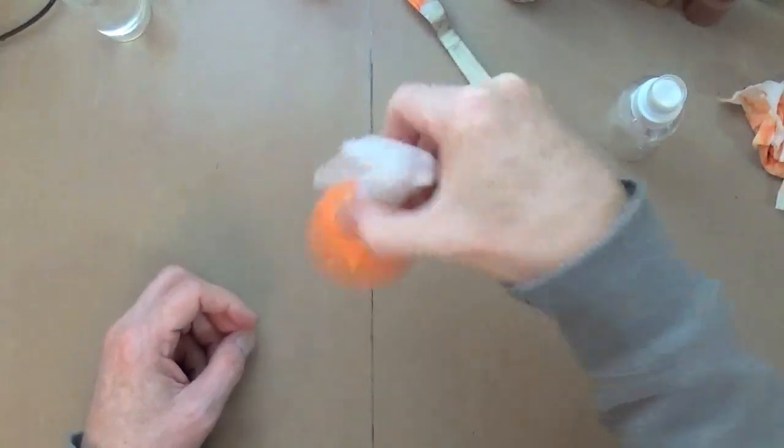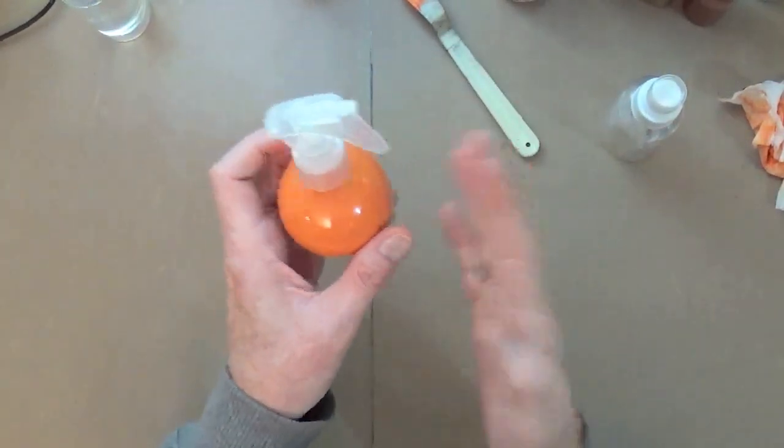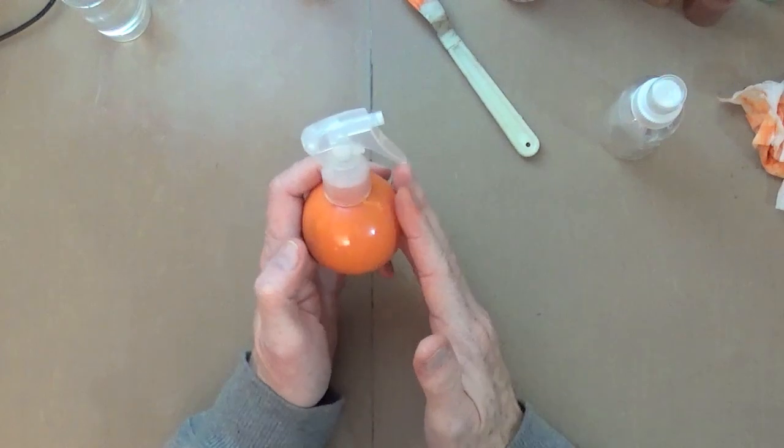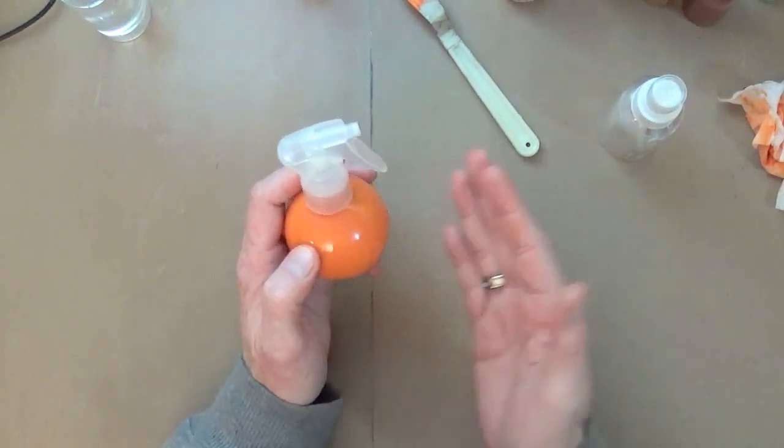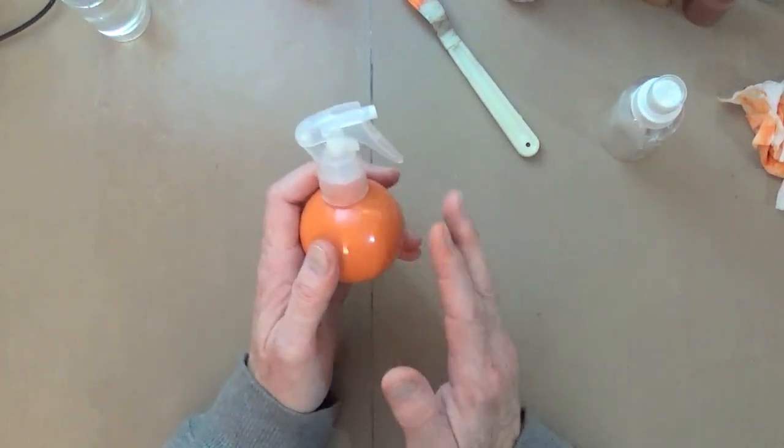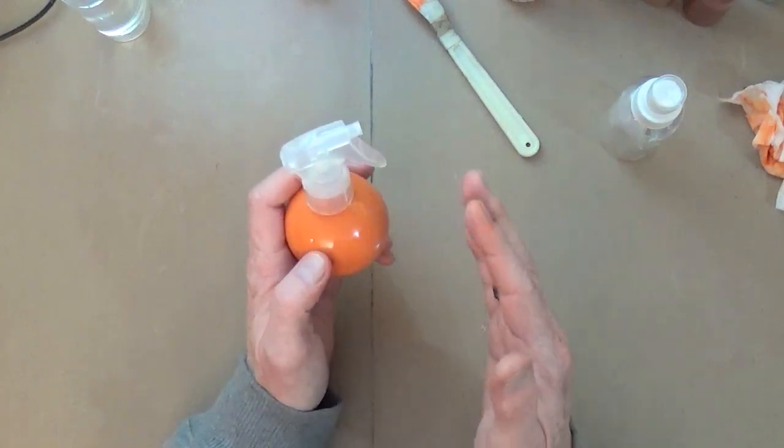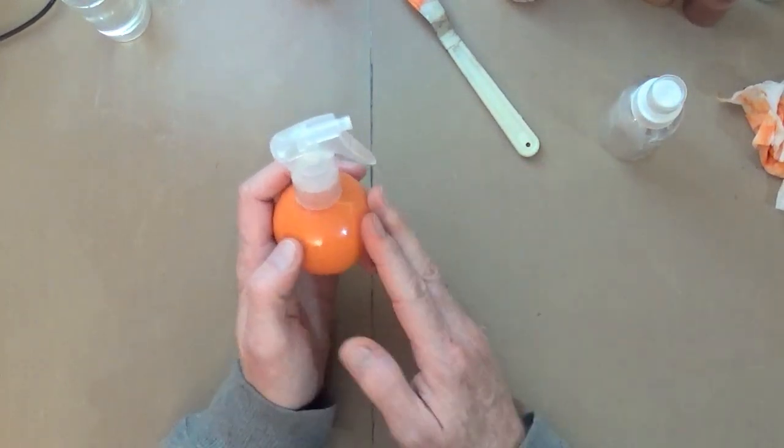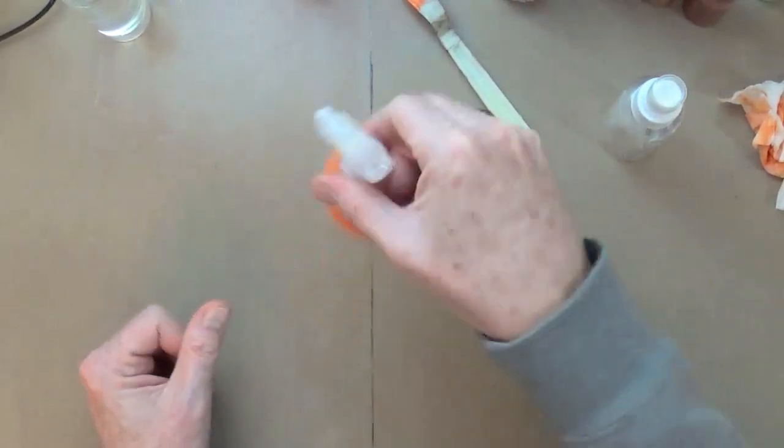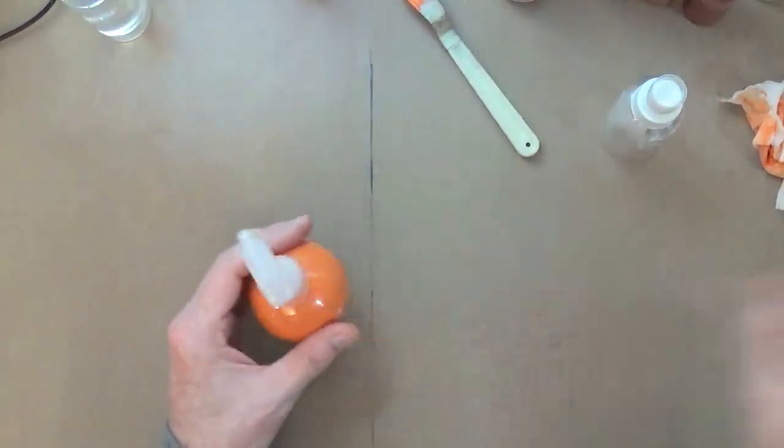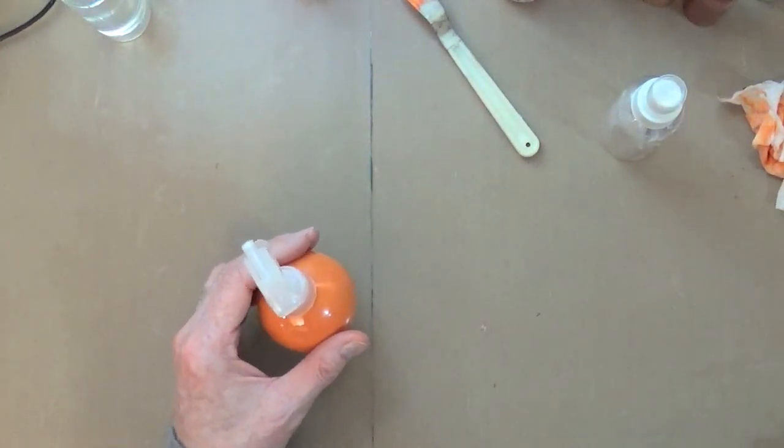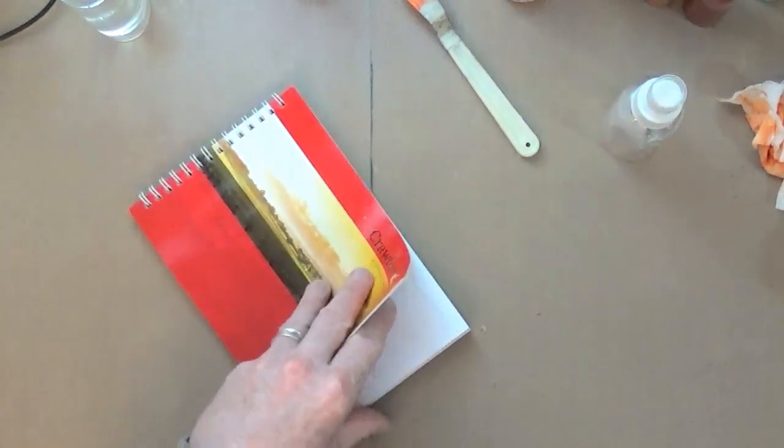Now the beauty of making your own is if the paint that you've got in there, if the color isn't dark enough or if it's not opaque enough, add more paint. If it's too thick, not runny enough, add more water. It's really down to you. You don't have to, the consistency is really, really up to you.